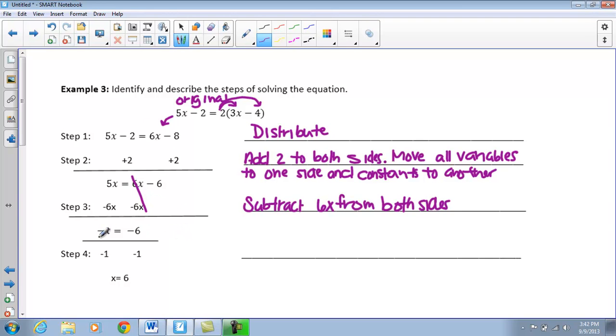Now, when we get to step 4, what I did was divide by negative 1 on both sides so that our x is all alone to solve the problem.